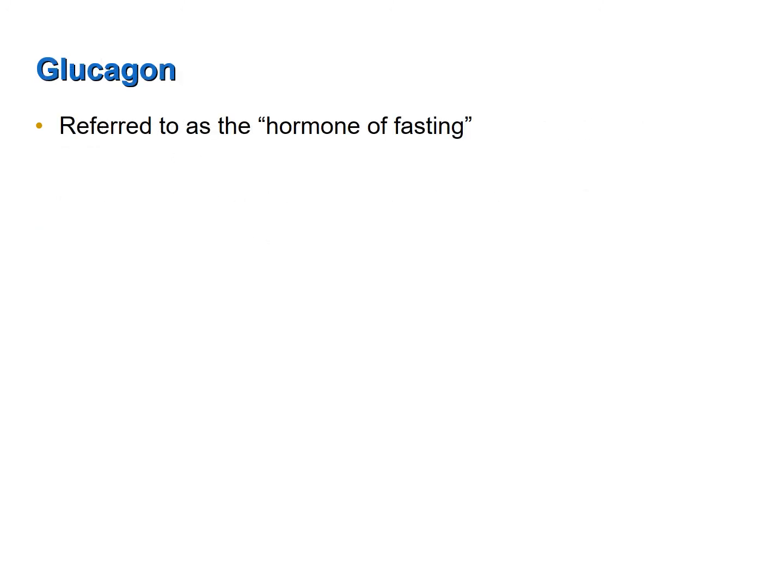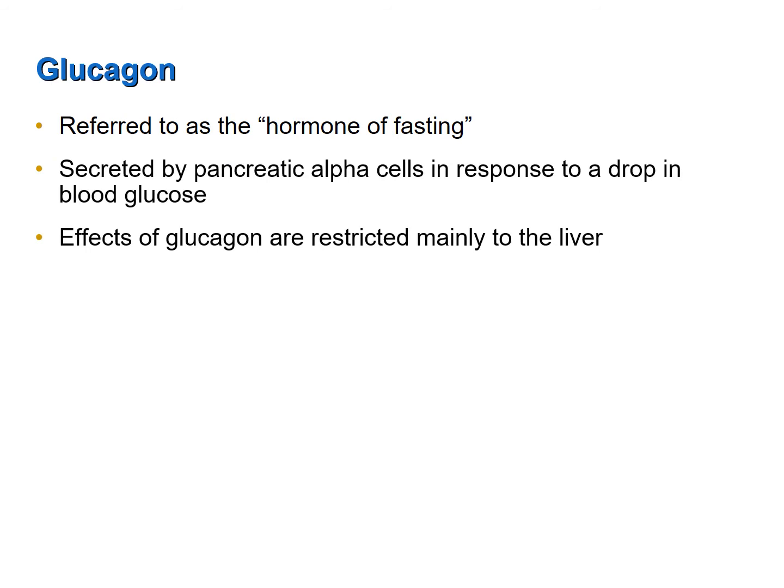Now let's turn our attention to glucagon. Glucagon is often referred to as the hormone of fasting, because secretion of glucagon increases as blood glucose levels fall, which typically occurs when you are between meals or haven't eaten in a while. Unlike insulin, the effects of glucagon are pretty much restricted to the liver — liver cells are principally the target cells of glucagon. Glucagon, like insulin, is a protein and therefore binds receptors on the extracellular face of the plasma membrane of its target cells.